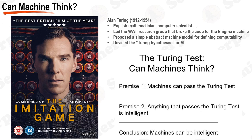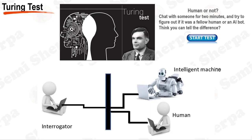The Imitation Game as a movie brings to life Alan Turing's story, showcasing his groundbreaking work in AI and highlighting the personal struggles he faced. The Imitation Game is a simple yet thought-provoking test to determine if a machine can exhibit intelligent behavior indistinguishable from that of a human. In this test, a human judge engages in a text-based conversation with two participants — a human and a machine. The judge's task is to determine which participant is the machine. If the judge is unable to reliably distinguish between the two, the machine is said to have passed the Turing test, demonstrating human-like intelligence. This test sparked a critical debate about the nature of intelligence and the possibility of creating machines that could think and learn like humans.